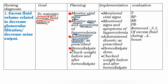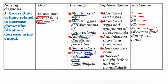Implementation: monitored vital signs, monitored signs and symptoms of hypovolemia, administered diuretics as prescribed, hemodialysis performed, checked weight before and after hemodialysis. Evaluation: body temperature, blood pressure, respiratory rate, pulse rate; removed 3 liters of excess fluid during 4 hours.